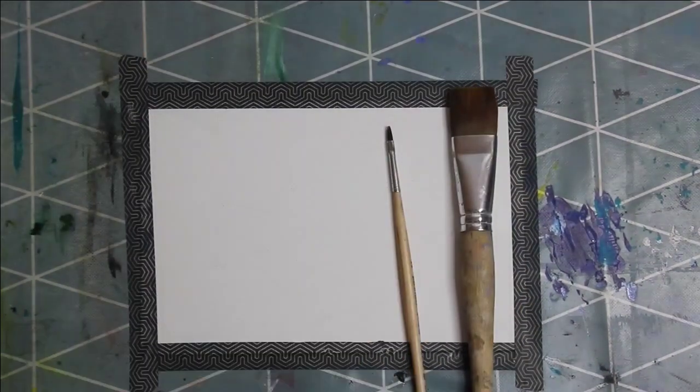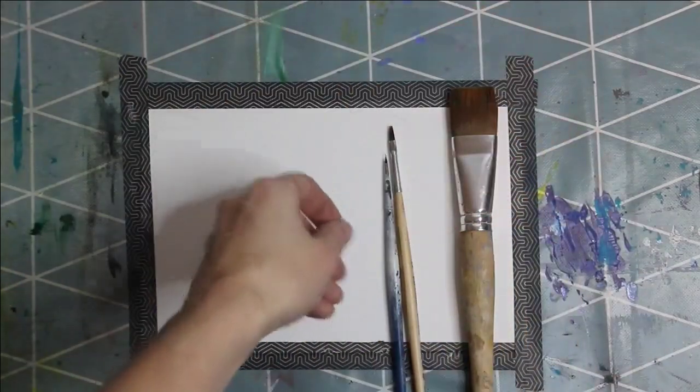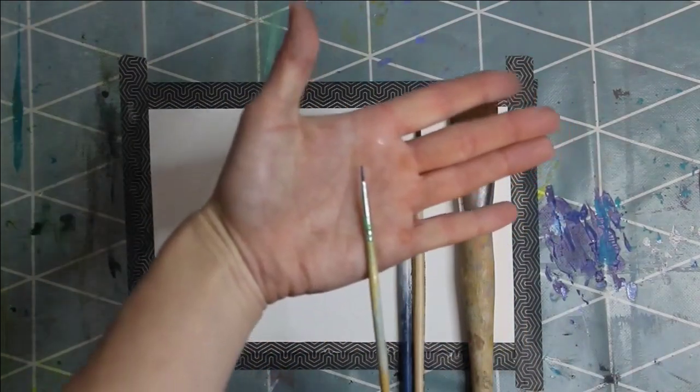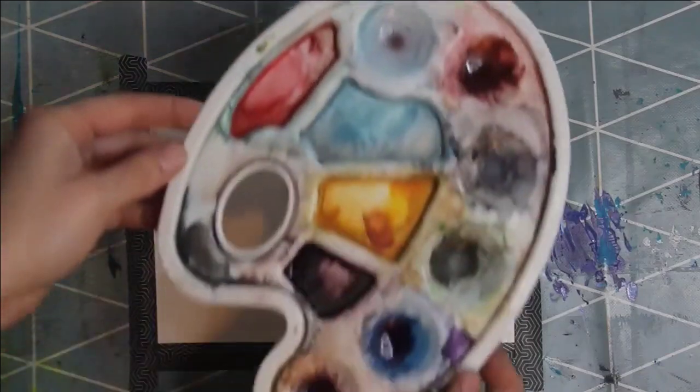For coloring you need some brushes. I for myself prefer thin brushes, but it also depends how big you want to draw the fish. Because I had a very small paper I used thin brushes. Additionally you need some water and watercolors of your choice. And a color palette for mixing colors.